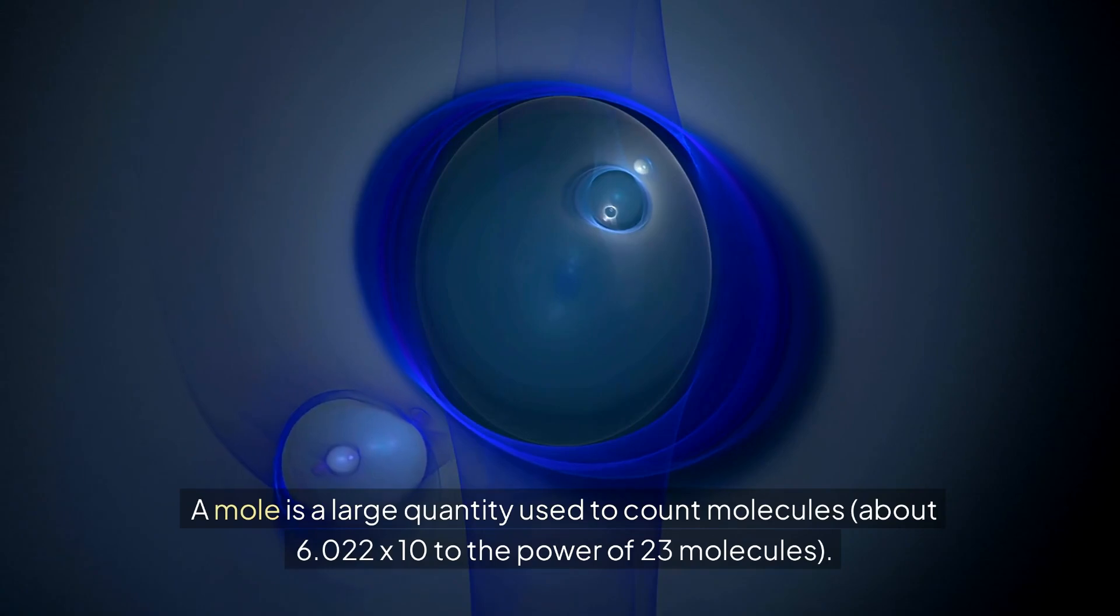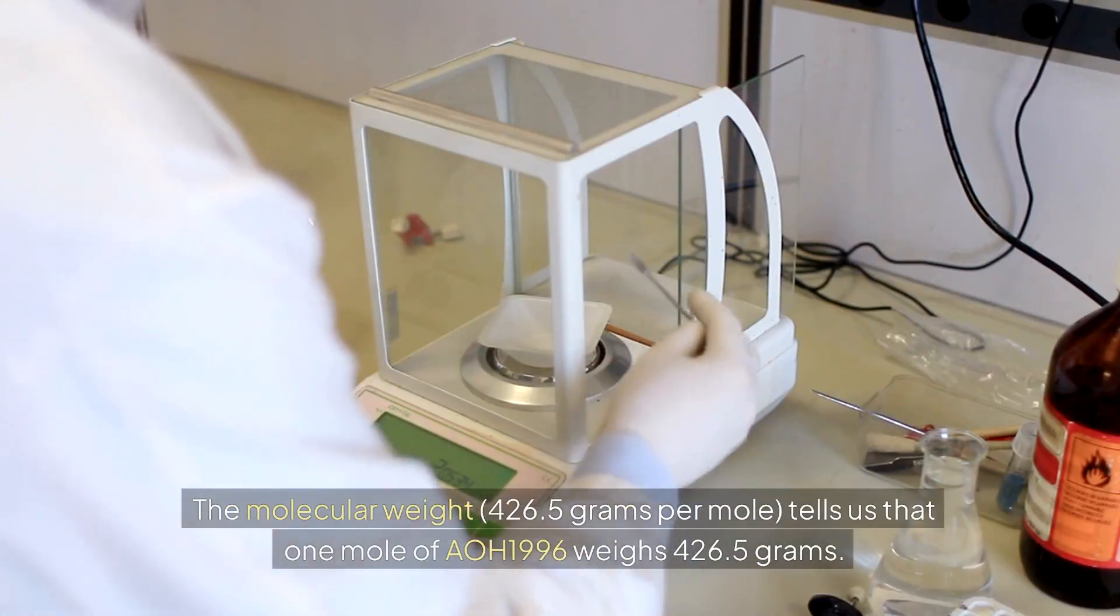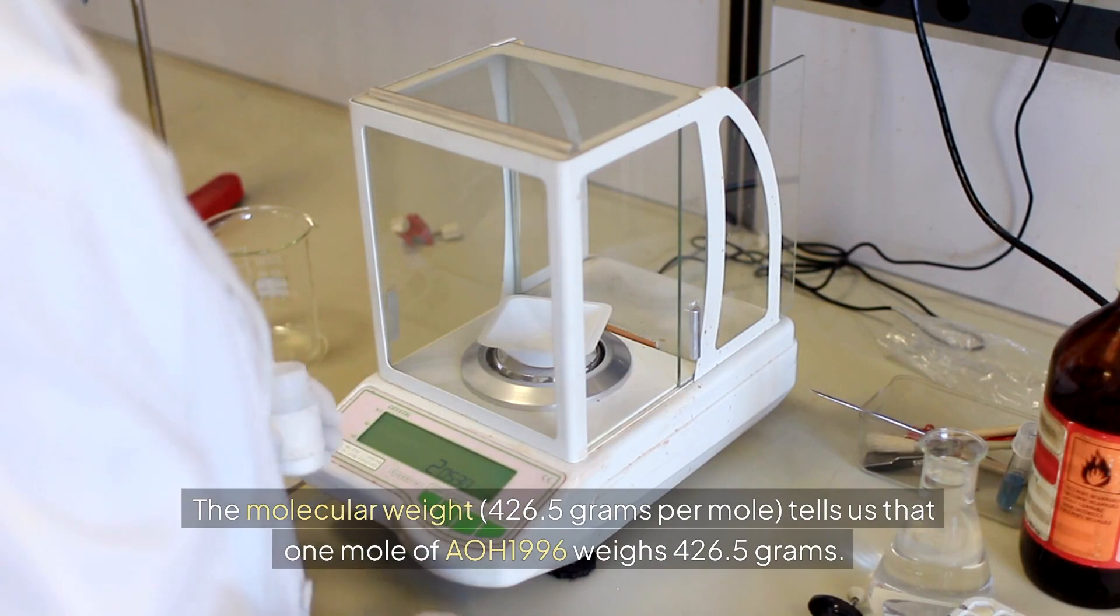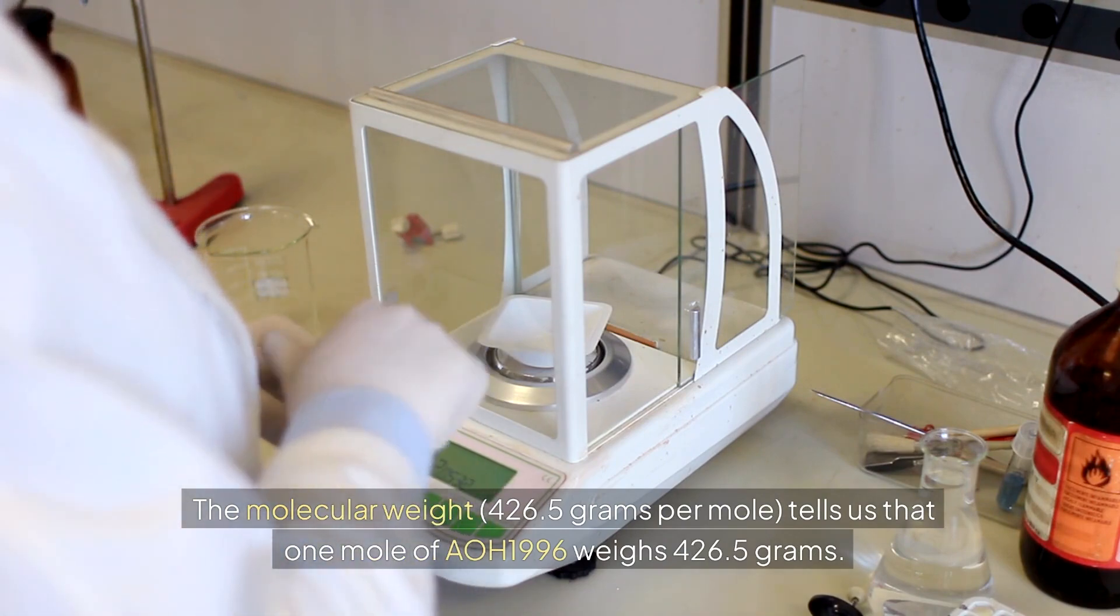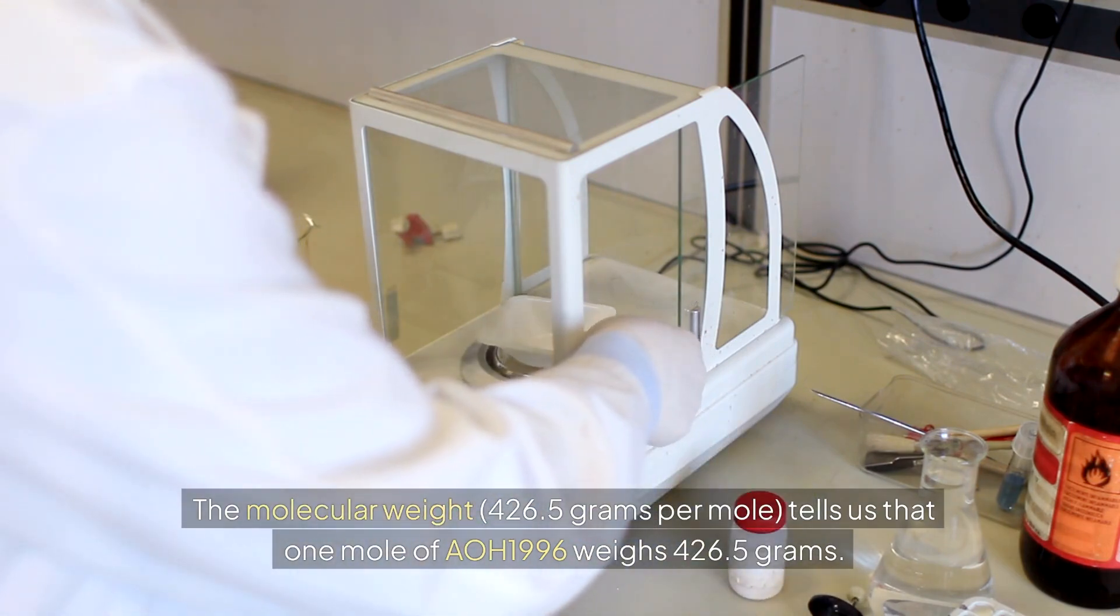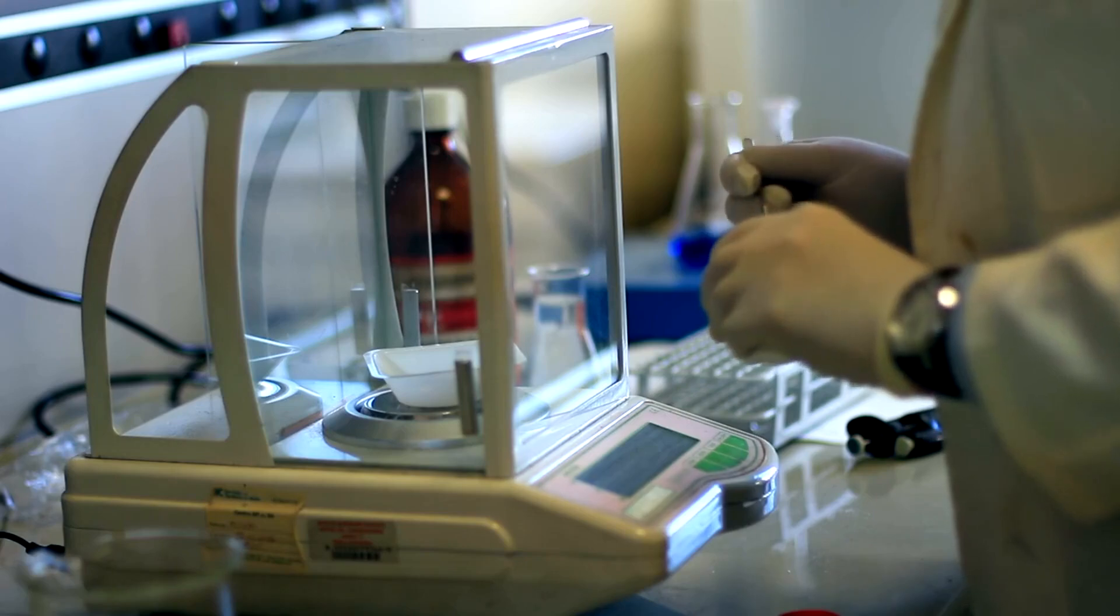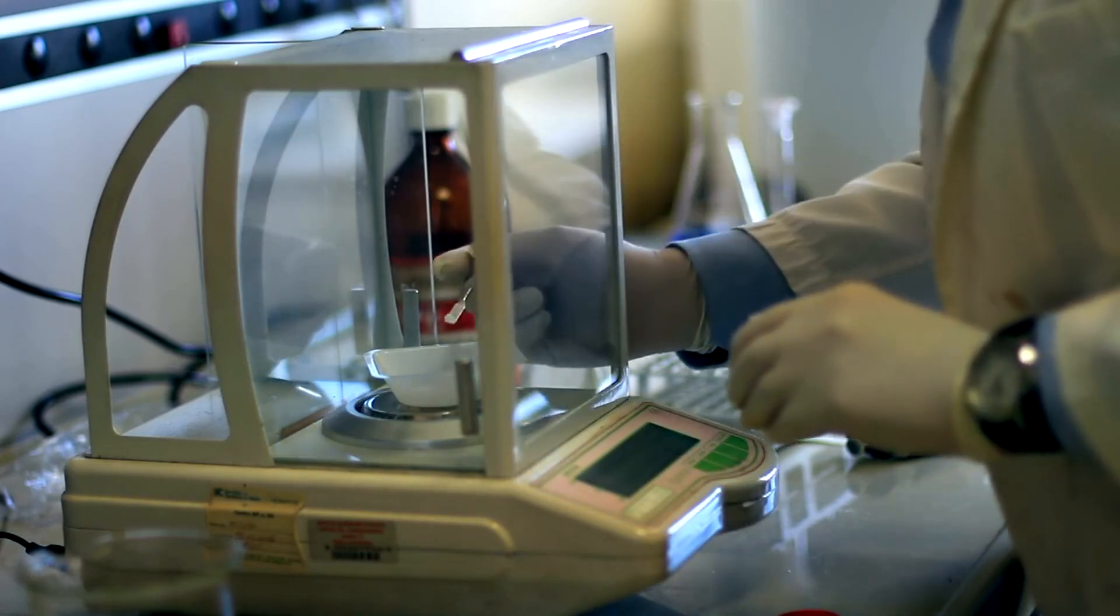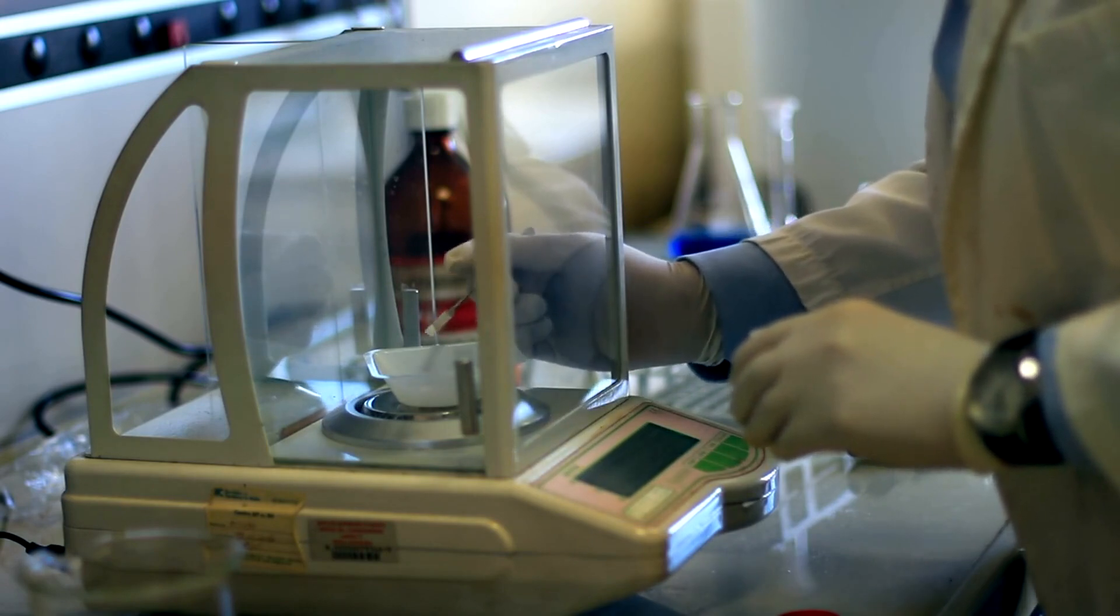The molecular weight 426.5 grams per mole tells us that one mole of AOH1996 weighs 426.5 grams. So the molecular weight helps scientists understand the mass of the compound at the molecular level, which is crucial for making precise measurements in experiments and formulations.